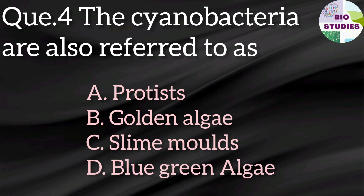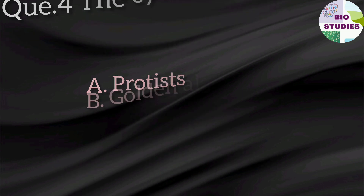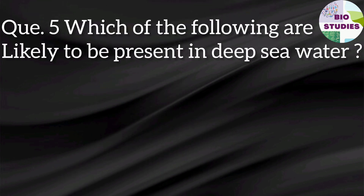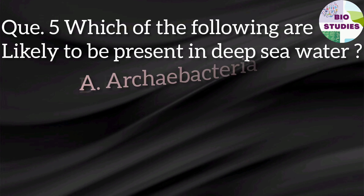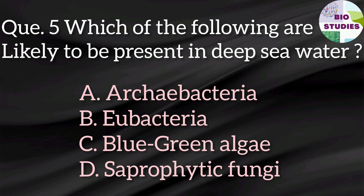Next question: cyanobacteria are also referred to as — options are protists, golden algae, slime molds, or blue-green algae. It's a very basic question and the answer is blue-green algae. Next question: which of the following are likely to be present in deep sea water?